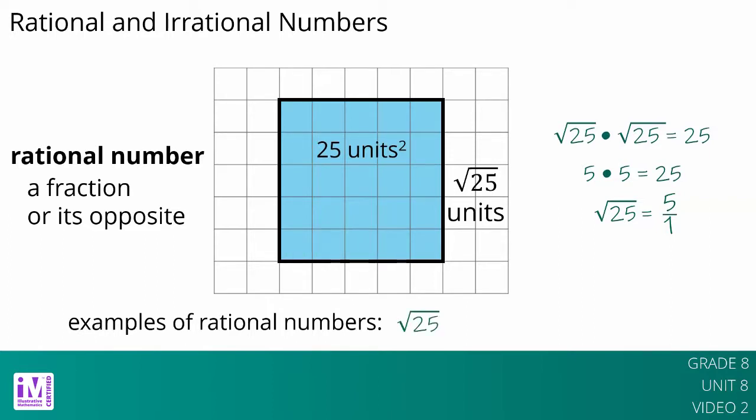And since rational numbers can be positive or negative, negative 5 is also a rational number, since negative 5 equals negative 5 over 1. Because fractions and ratios are closely related ideas, fractions and their opposites are called rational numbers. Here are some more examples of rational numbers.